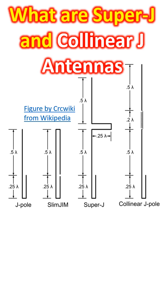The figure by CRC Wiki from Wikipedia illustrates all four types of J-pole antennas. While Super-J uses a quarter-wave phasing stub, Collinear J-pole uses a phasing coil with physical length of 0.2 wavelength, which gives a more sleek appearance for the antenna.